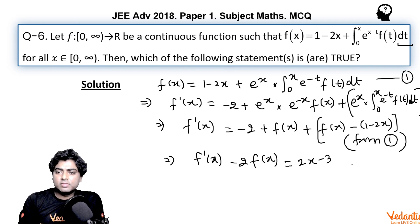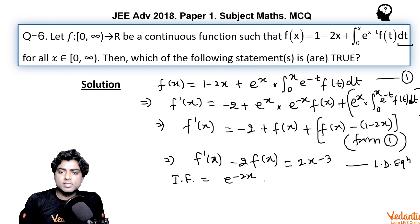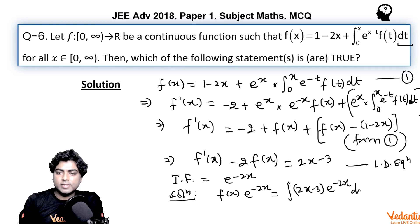So obviously, this is a linear differential equation. So we need to check, integrating factor here is e^(-2x), then the solution would be, solution to this linear differential equation would be f(x) times e^(-2x), that is integrating factor, then we should integrate (2x - 3) times the integrating factor e^(-2x) dx.